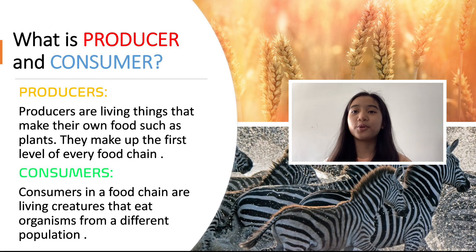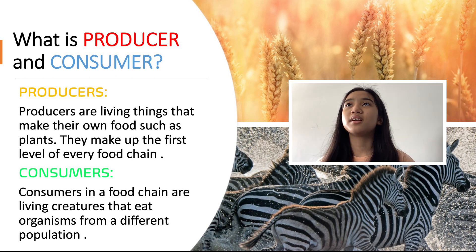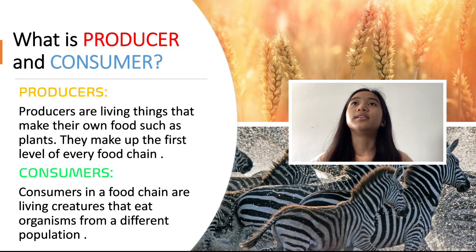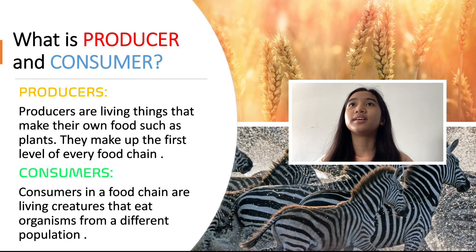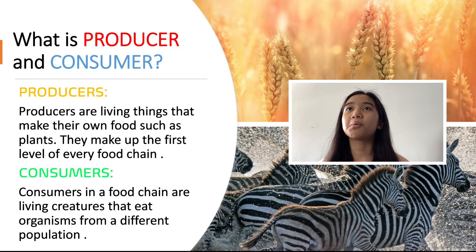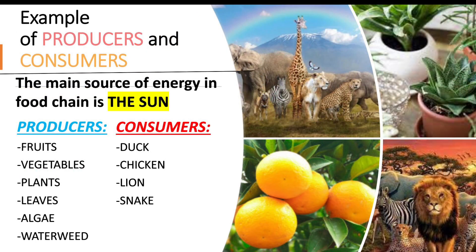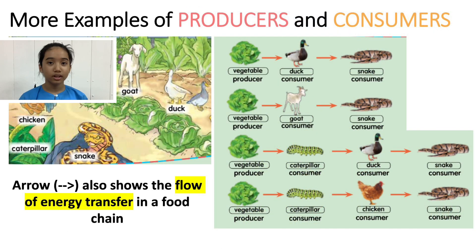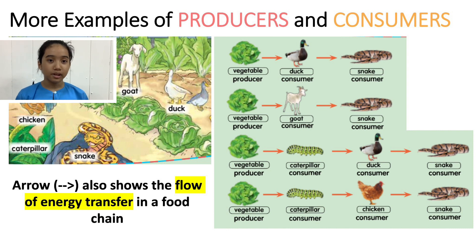Let me explain about producers and consumers. Producers are living things that make their own food, such as plants. They make up the first level of every food chain. Consumers are living creatures in a food chain that eat organisms from a different population. Here are more examples of producers and consumers. The arrow also shows the flow of energy transferred in the food chain.